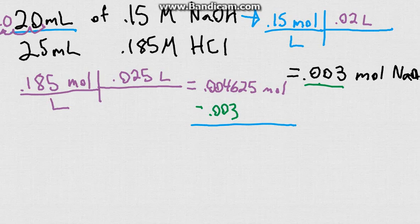And that essentially gives us our net result. Essentially how many moles of hydrochloric acid we have left after this reaction takes place. Which is going to be 0.001625 moles of hydrochloric.